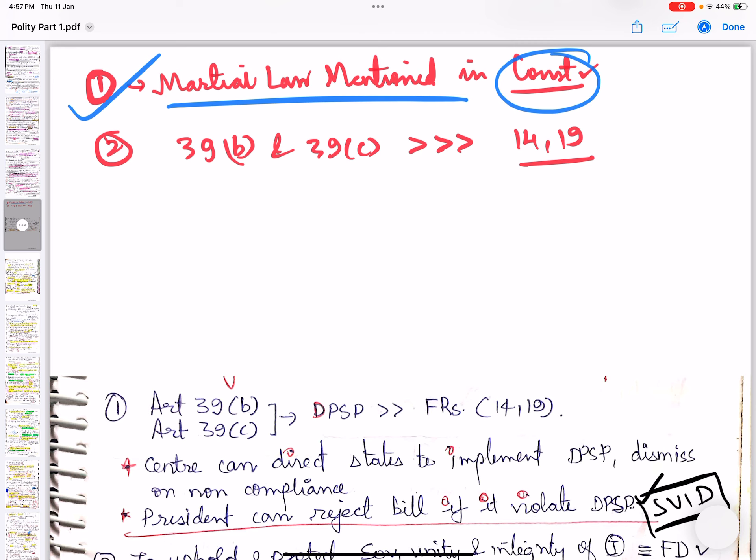Now, in our country, Article 39 sub-clause B and 39 sub-clause C, which is part of DPSP, has precedence over Article 14 and 19, which is part of Fundamental Rights. So please remember, can some DPSP be given preference over Fundamental Rights? Answer is yes, yes and yes.